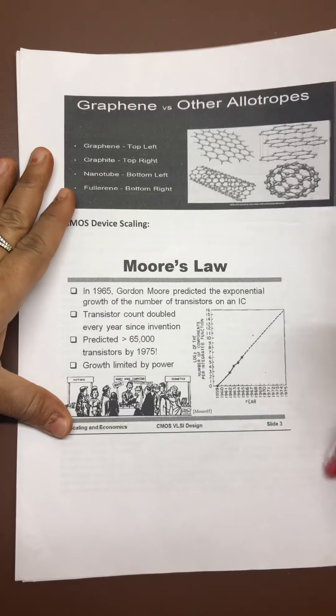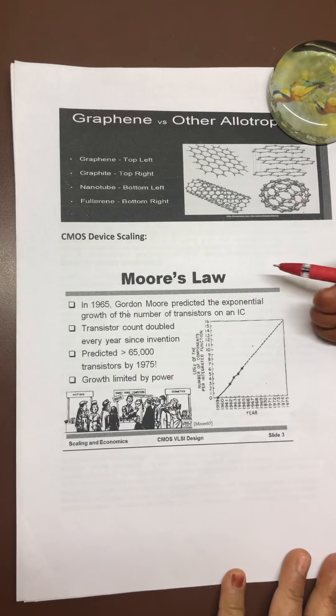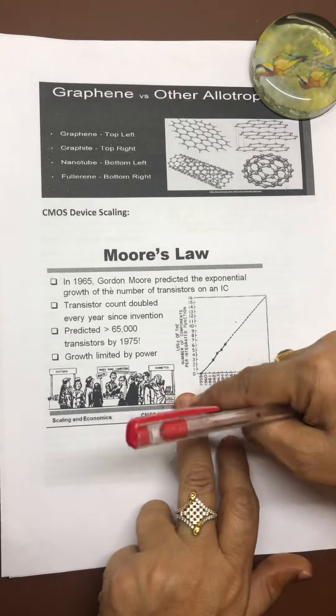Moore's law was developed in 1965 by Gordon Moore. He gives an exponential growth of number of transistors with respect to the number of years.